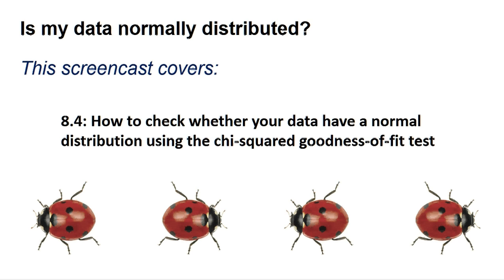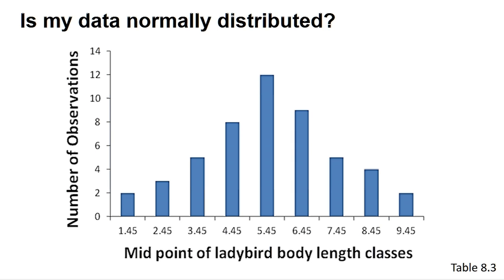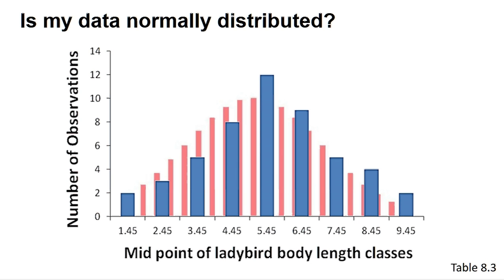Thus, researchers often like to do tests to determine if the data is normal and we will outline some in this screencast. Please note that absolute justification that a small data set is normally distributed is almost impossible to do. One common approach can be illustrated using the data from table 8.3 shown in the bar chart. We can calculate a mean and standard deviation from this data and then predict the distribution of values we should get if the data is normal, as we can see from the underlayed bar chart in pink. We can then perform a chi-squared or similar test to see if our values are consistent with those expected values. This generates a probability, and if it is below 0.05, we can state the observed and expected data are significantly different and that our data is not normal. How to do this chi-squared test is detailed in the book.